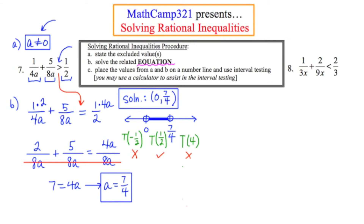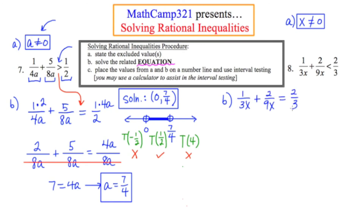For number eight, part A is to state the excluded values. Looking at the denominators, the variable is x, and x should never be 0 — if x is 0, we'll have a problem. So x cannot equal 0. In part B, I solve the related equation by rewriting problem eight as an equation instead of an inequality. The LCD is 9x, and I'll set up to rewrite each fraction with that LCD of 9x.